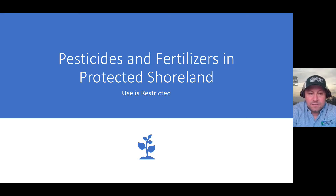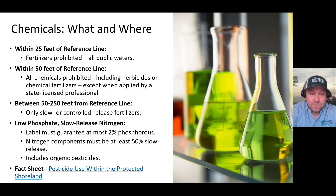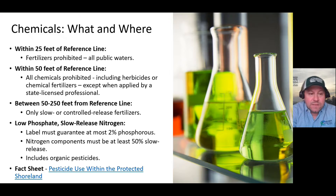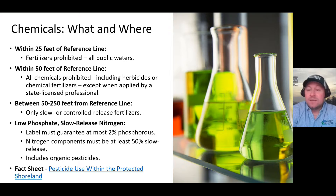Now let's discuss pesticides and fertilizers in protected shoreland areas. The use of both is restricted — as a general rule, use becomes more restricted the closer you get to the water. Within 25 feet of the reference line, all fertilizers are prohibited in all public waters. Within 50 feet, all chemicals are prohibited including herbicides or chemical fertilizers, except when applied by a state-licensed professional. Between 50 and 200 feet, you can only use slow or controlled release fertilizers. The fertilizer label must guarantee at most 2% phosphorus and nitrogen components must be at least 50% slow release. This applies to organic pesticides as well. Further reading is available in our fact sheet called 'Pesticide Use Within the Protected Shoreland,' available on our website.